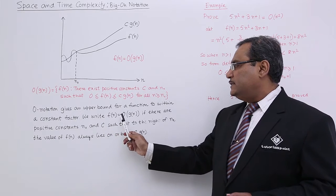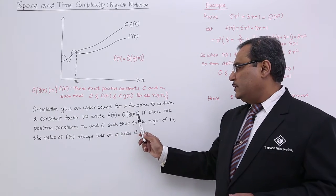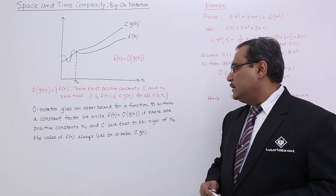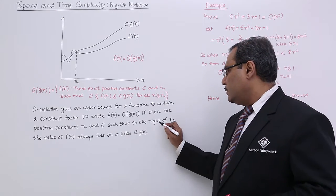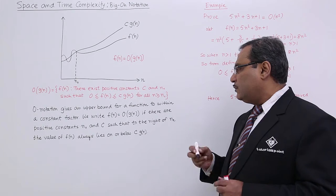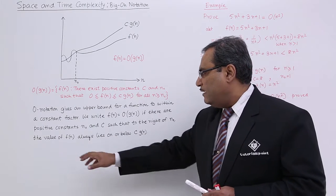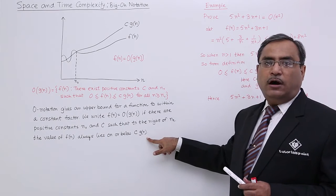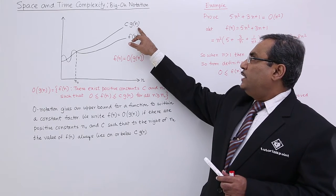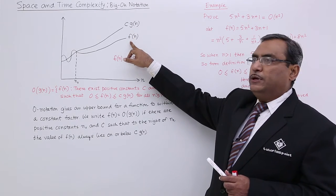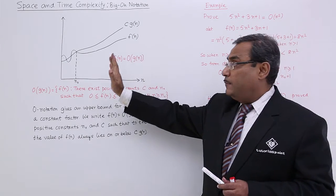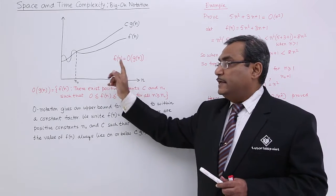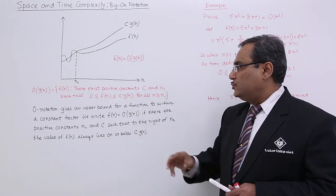We write f(n) = O(g(n)) if there are positive constants n₀ and c such that to the right of n₀, the value of f(n) always lies on or below c·g(n). So c·g(n) is the upper bound compared to f(n) when the value of n is n₀ or greater.